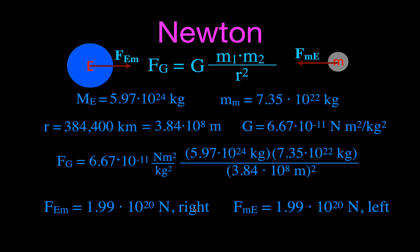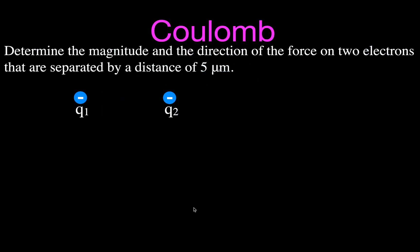We can do something very similar with Coulomb's law. We'll determine the magnitude and direction of the force on two electrons separated by 5 micrometers. Here are our two electrons with negative charges — Q1 and Q2. Because they are the same charge, they will repel each other. The force on electron 1 from electron 2 is to the left (the negative direction), and the force on electron 2 from electron 1 is to the right (the positive direction). Those two forces are equal in magnitude but opposite in direction. Note: if the force is negative, it doesn't mean the force is less than zero — it just means the force is in the negative direction.